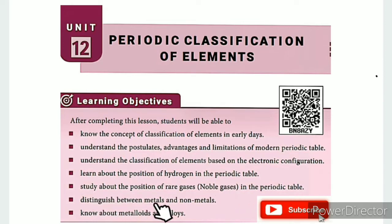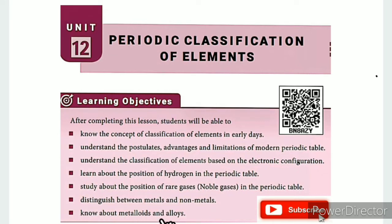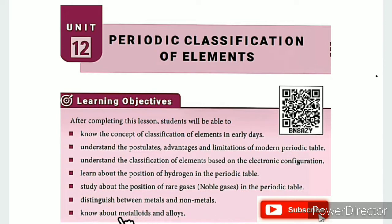You will also study about the position of rare gases or noble gases in the periodic table, distinguish between metals and non-metals, and know about metalloids and alloys. In this video, metals, non-metals, and metalloids will be explained to you.